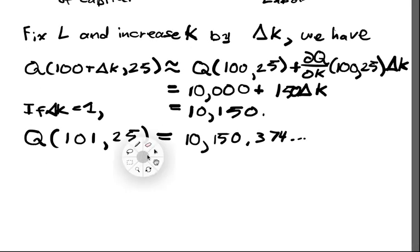Also at this point, we see that in this situation, if we increase the capital by one unit, roughly we're going to have a 150 unit increase in our production. But what if we increase L? We'd use the same type of formula.